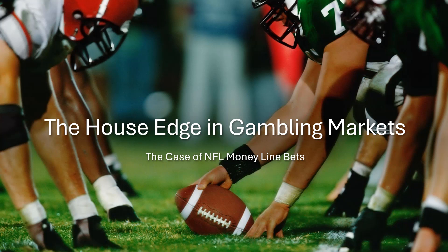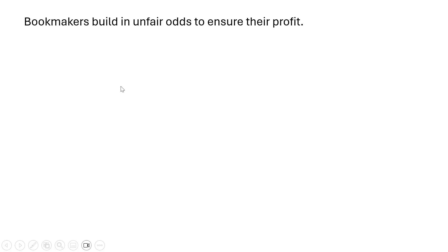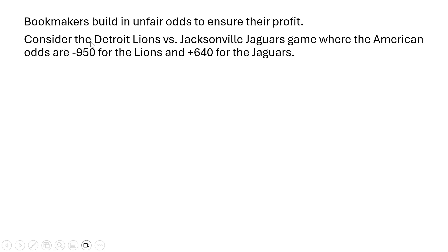Hello, in this video we're going to look at the house edge in gambling markets. This is going to be the case of NFL Moneyline Bets. Bookmakers build in unfair odds to ensure their profit. Let's consider the upcoming Detroit Lions vs. Jacksonville Jaguars game, where the American odds are minus 950 for the Lions and plus 640 for the Jaguars.